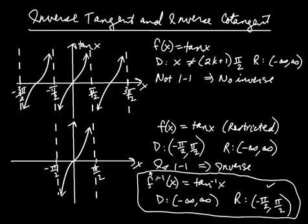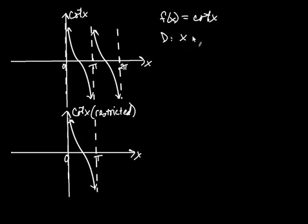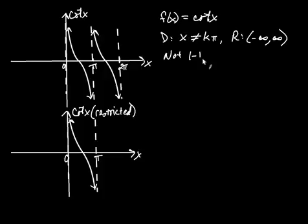We can also create inverse cotangent. At the top here is the graph of cotangent — I've graphed two cycles. Once again, the function is not one-to-one. The domain of cotangent is x can be anything except a multiple of pi, and the range is negative infinity to infinity. The problem is that it's not one-to-one, so that implies there's no inverse. So we're going to restrict the domain such that the function is one-to-one.